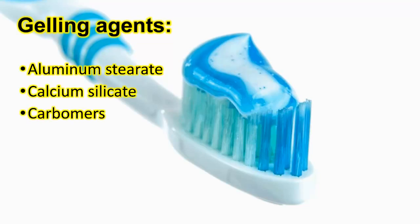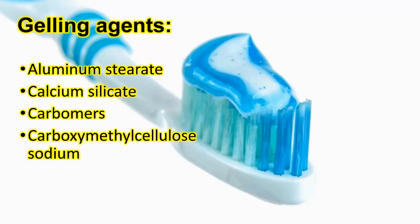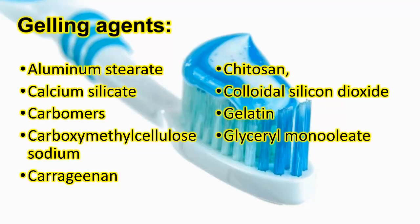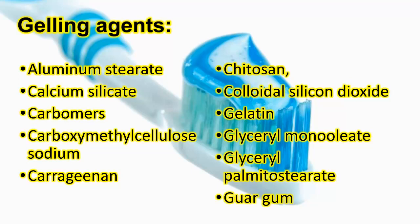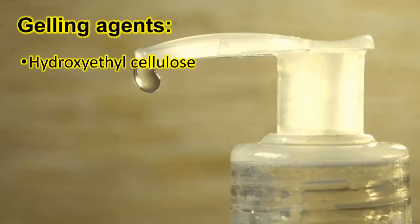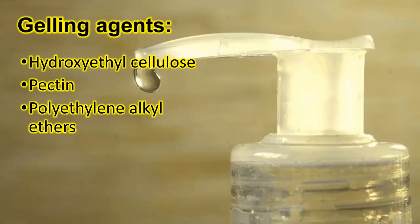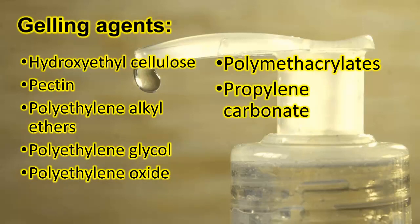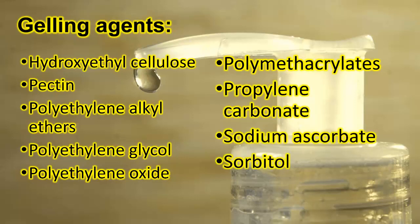Gelling agents include: Aluminum stearate, Calcium silicate, Carbomers, Carboxymethylcellulose sodium, Carrageenan, Chitosan, Colloidal silicon dioxide, Gelatin, Glycerol monooleate, Glycerol monostearate, Guar gum, Hydroxyethylcellulose, Pectin, Polyethylene alkyl ethers, Polyethylene glycol, Polyethylene oxide, Polymethacrylates, Propylene carbonate, Sodium ascorbate, Sorbitol, and Zinc acetate.